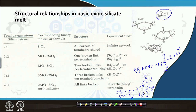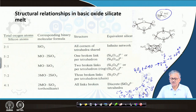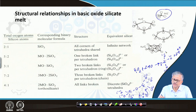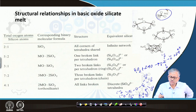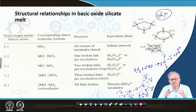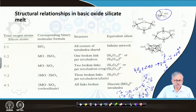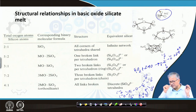As you increase the basic oxide, the oxygen-to-silicon atom ratio increases, and as a result the number of bonds that will be broken also increases. Finally, when SiO2 reacts with 2 moles of basic oxide, you get the orthosilicate composition - the simplest anionic complex SiO4 4-. You cannot further break this; this is the simplest silicon anionic complex in the melt. This occurs when the basic oxide to silica ratio is 2, or equivalently the oxygen atom to silicon ratio is 4:1.